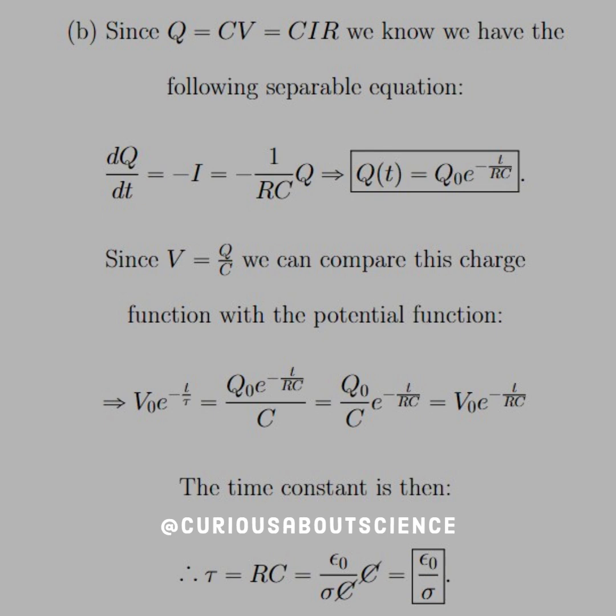Okay, so this tells us that the time constant is RC. And if we solve in for what R was, we see that the C's cancel and we're just left with a time constant of epsilon-not over sigma. Pretty darn cool.